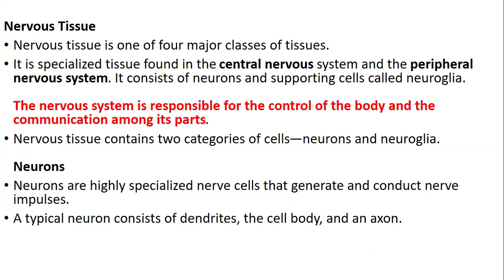The nervous tissue is one of the four classes of tissues. It is a specialized tissue found in the central and peripheral nervous system. It comprises neurons and supporting cells called neuroglia. The nervous system is responsible for the control of the body and communication among its parts. The nervous tissue contains two categories of cells: neurons and neuroglia. Neurons are highly specialized nerve cells that generate and conduct nerve impulses. A typical neuron consists of the dendrite, cell body, and the axon.